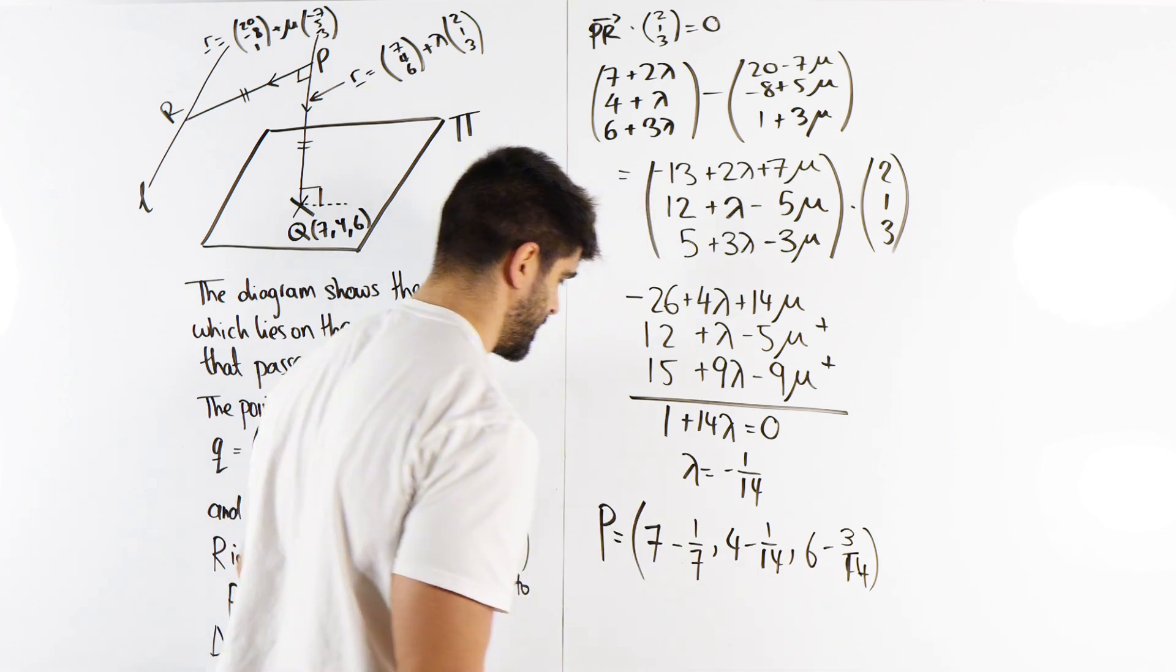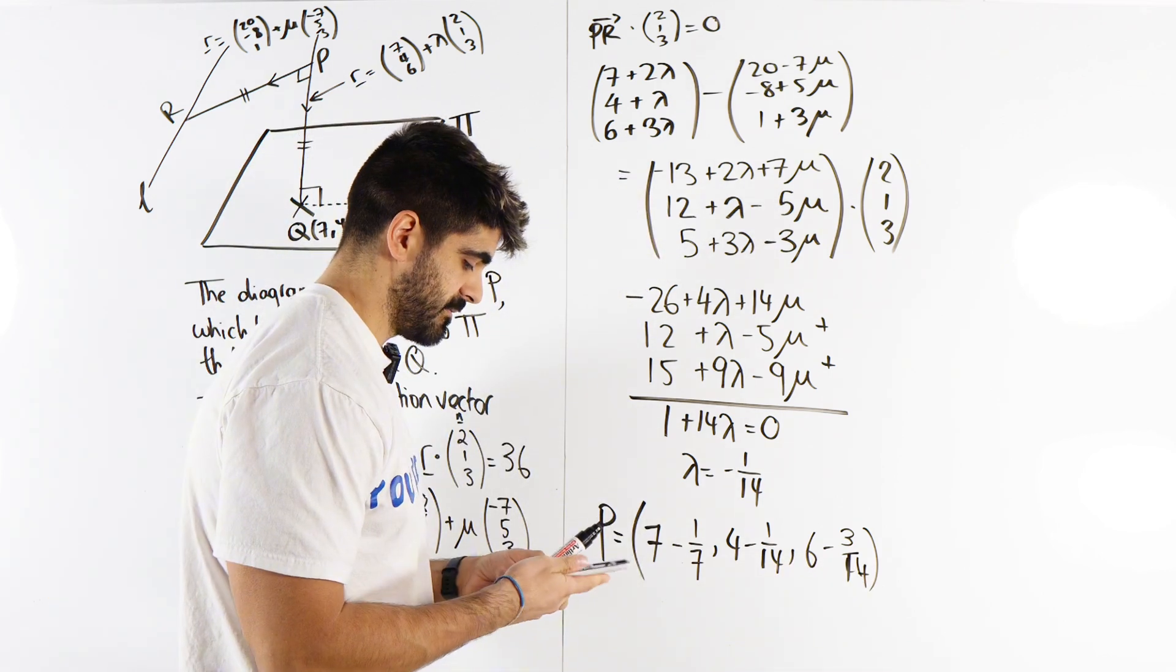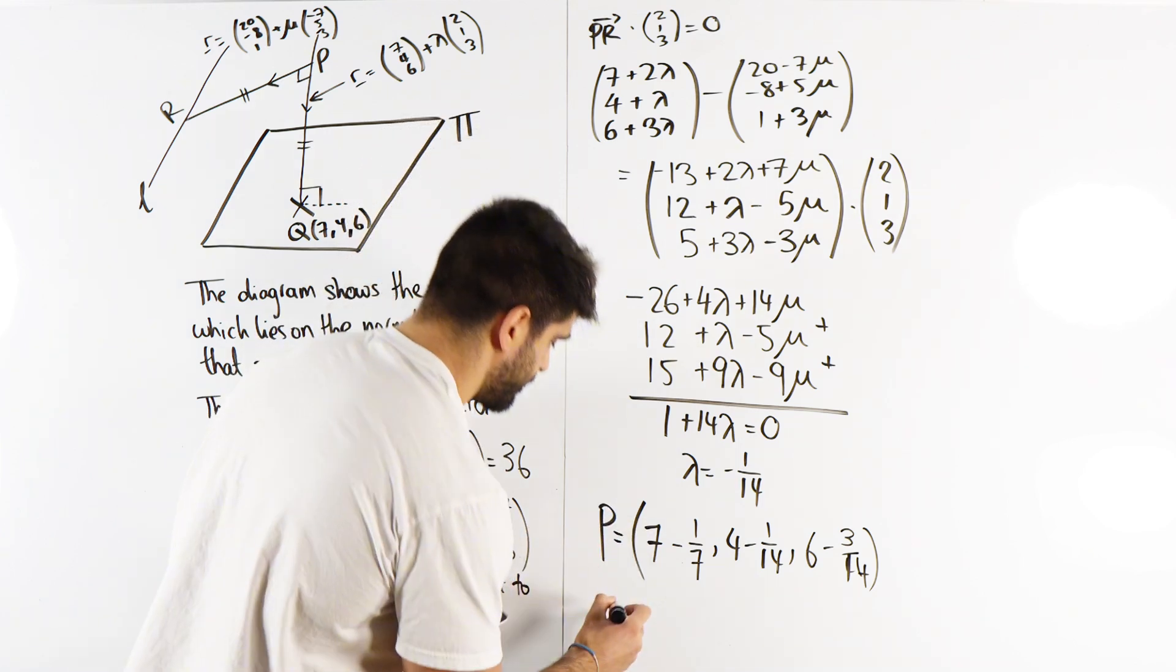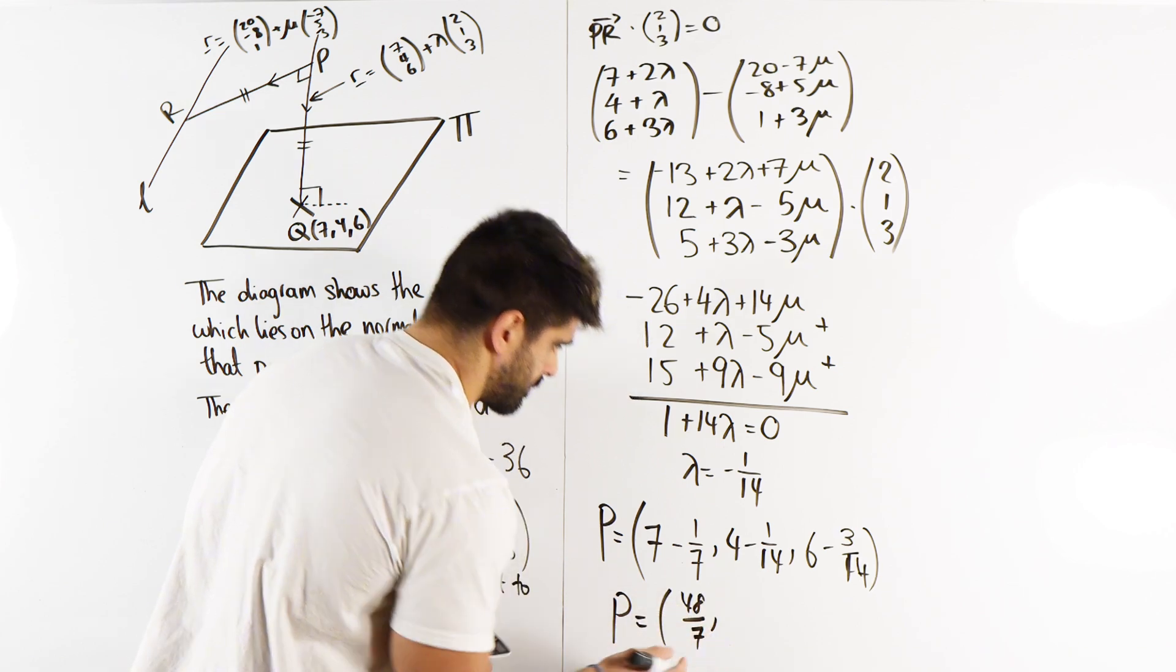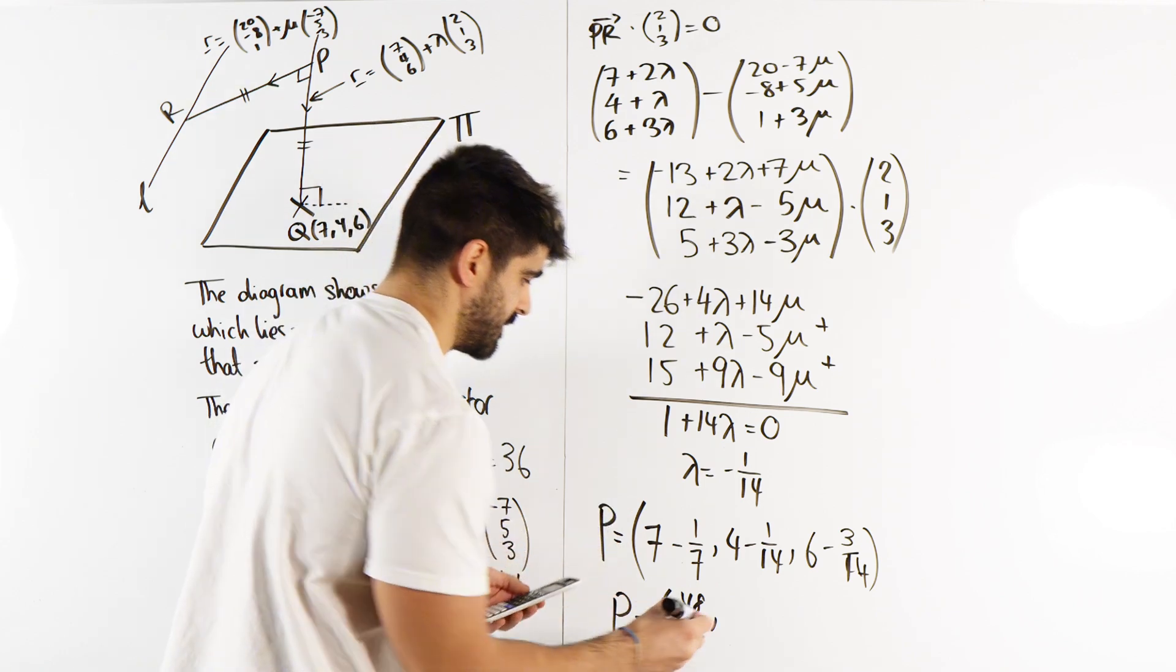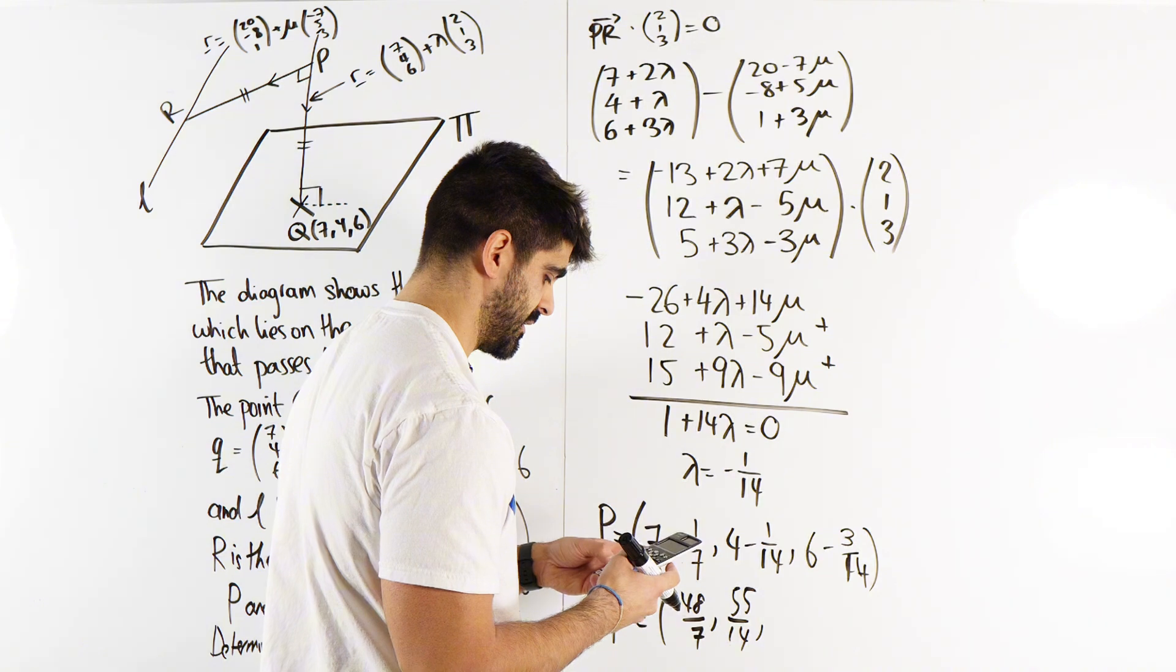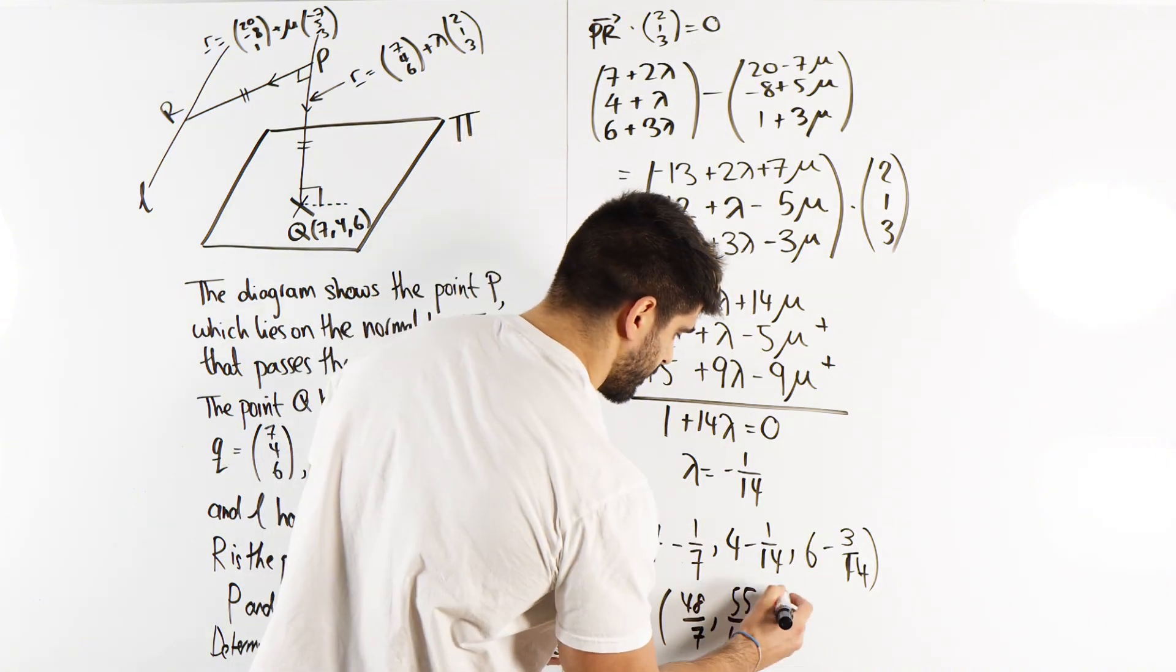Don't know what that is. Where's my calculator? That'll be 48 over 7, right? 7 minus 1 seventh: 48 over 7. Then 4 minus 1 over 14 is 55 over 14. And then 6 minus 3 over 14: 81 over 14.